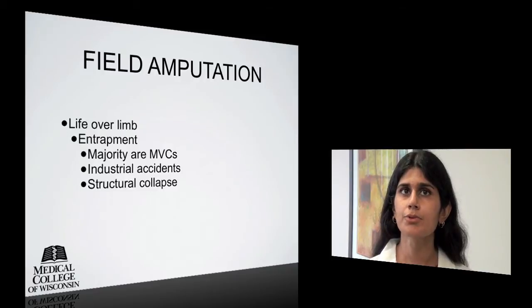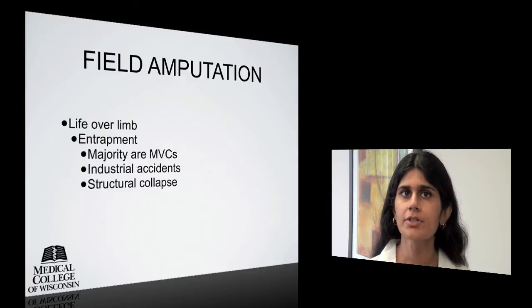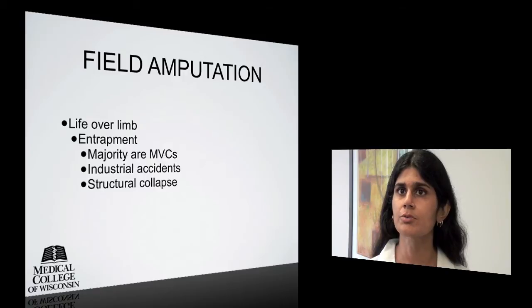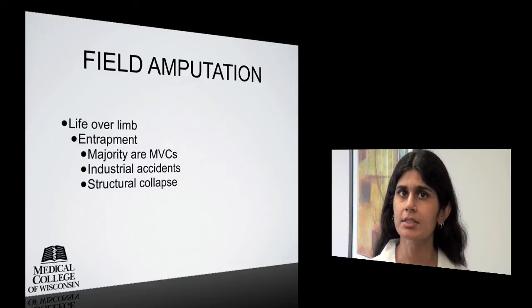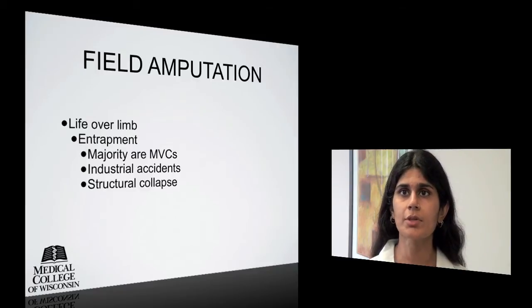The primary principle of field amputation is that of life over limb, which will be discussed further later on. The need for field amputation usually arises when a person, and especially an extremity, is entrapped. The majority of field amputations occur as a result of entrapment by boat or vehicle crashes. Industrial and farming accidents, such as having an extremity trapped in an auger or piece of equipment, may also necessitate a field amputation. Structural collapse is also another potential indication for field amputation.